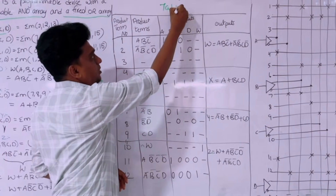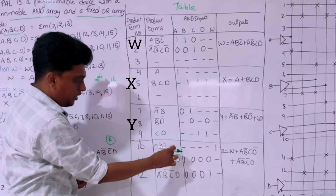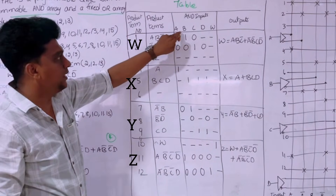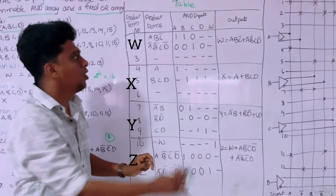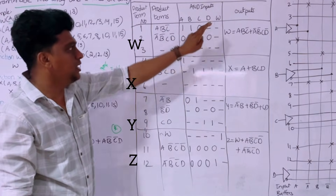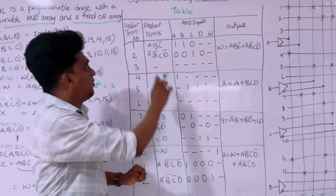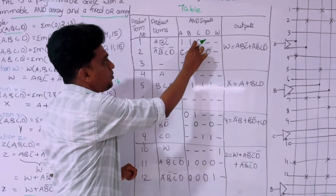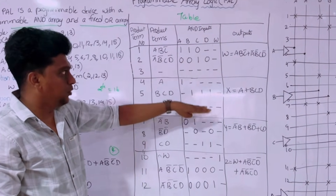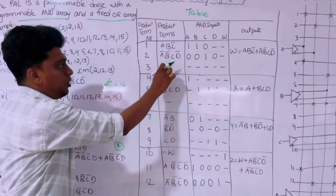Now for the programming table: we write the product terms for W, X, Y, and Z. The inputs are A, B, C, D, and W — since W is also used as an input. In the table, if a variable appears uncomplemented, put a 1; if it is a complement term, put a 0; if there is no term, put a dash. If a function has only two product terms, put a dash for the third. This is the same approach as used in PLA.